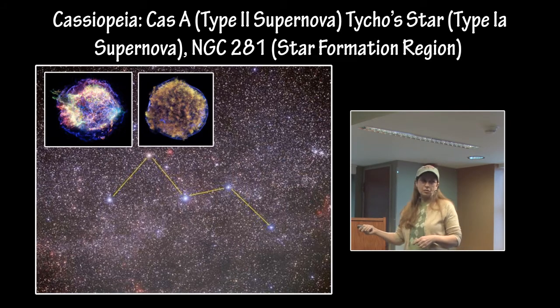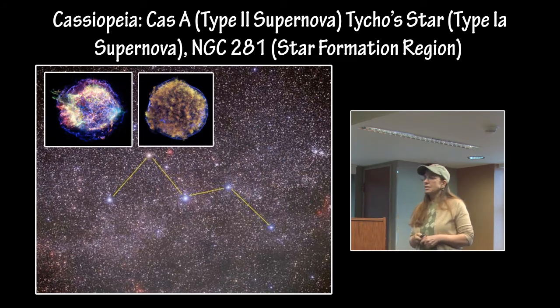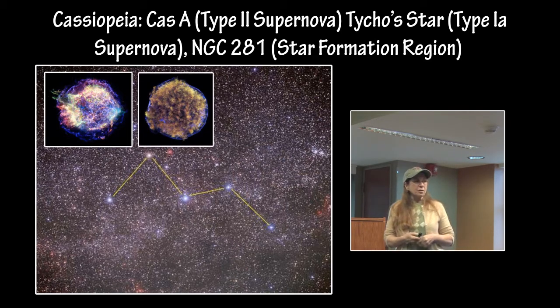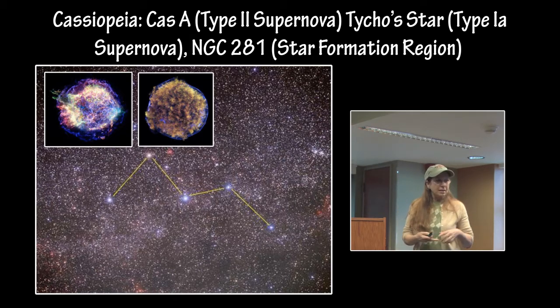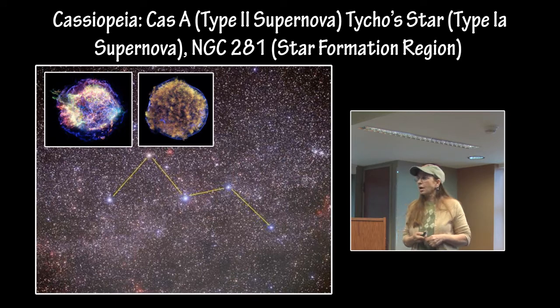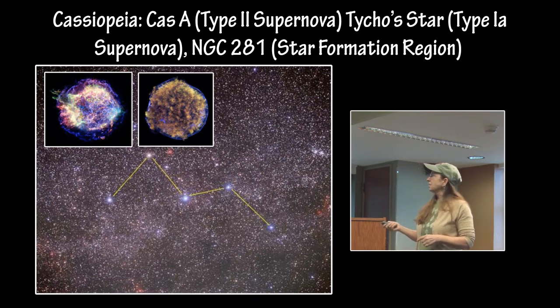This is Tycho's supernova remnant, which is the thermonuclear destruction of a white dwarf that was in a binary system with another star that was destroyed.